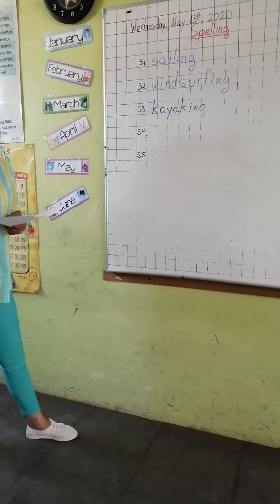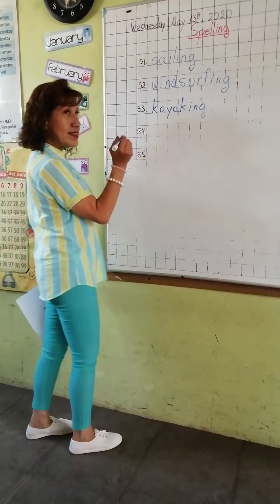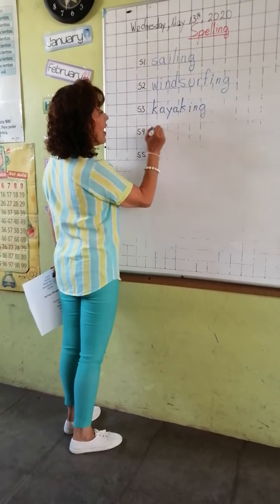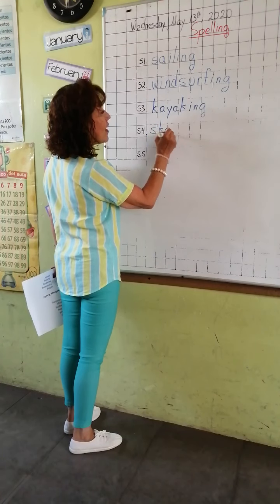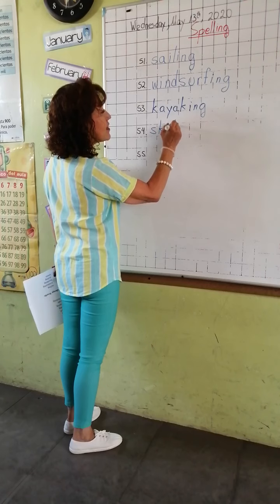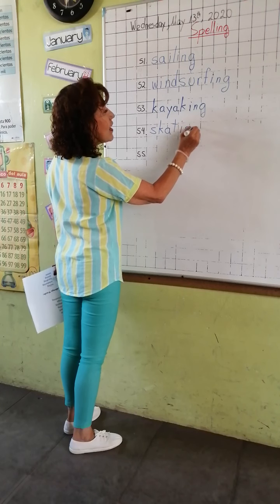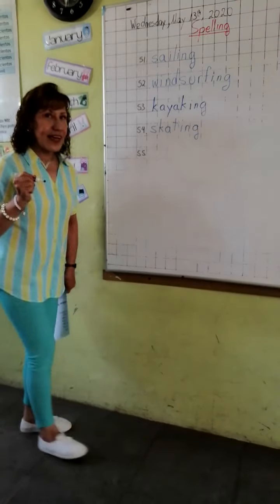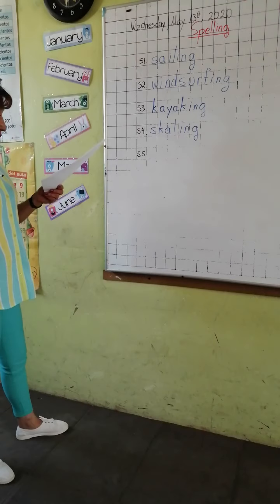Now, skating. Tell me the spelling: S, K, A, T, I, N, G. Skating. Very good.